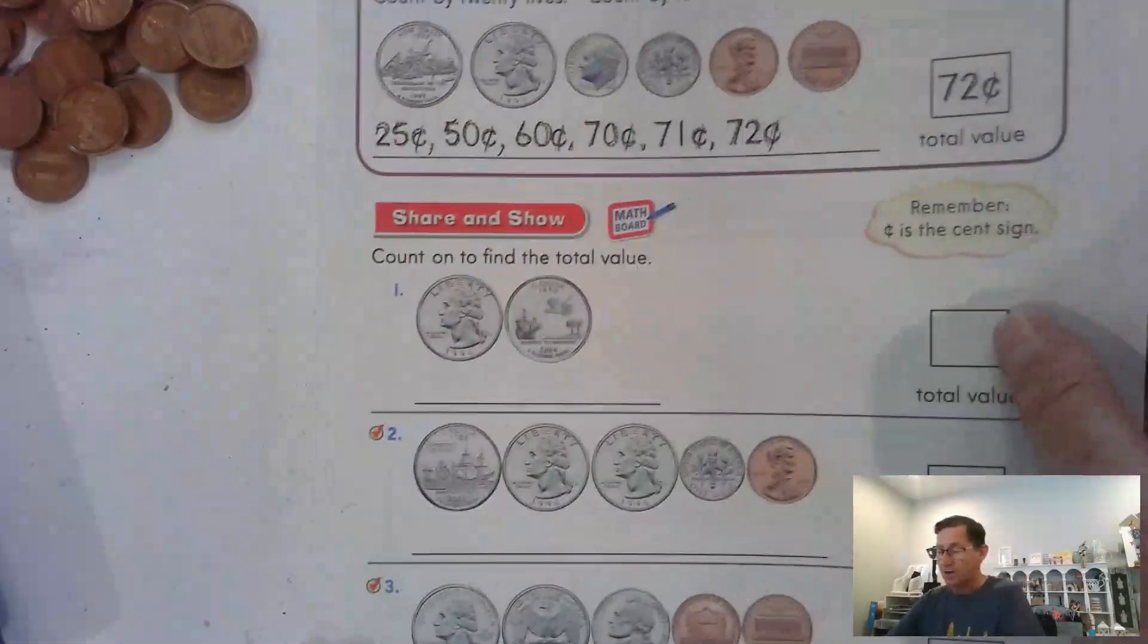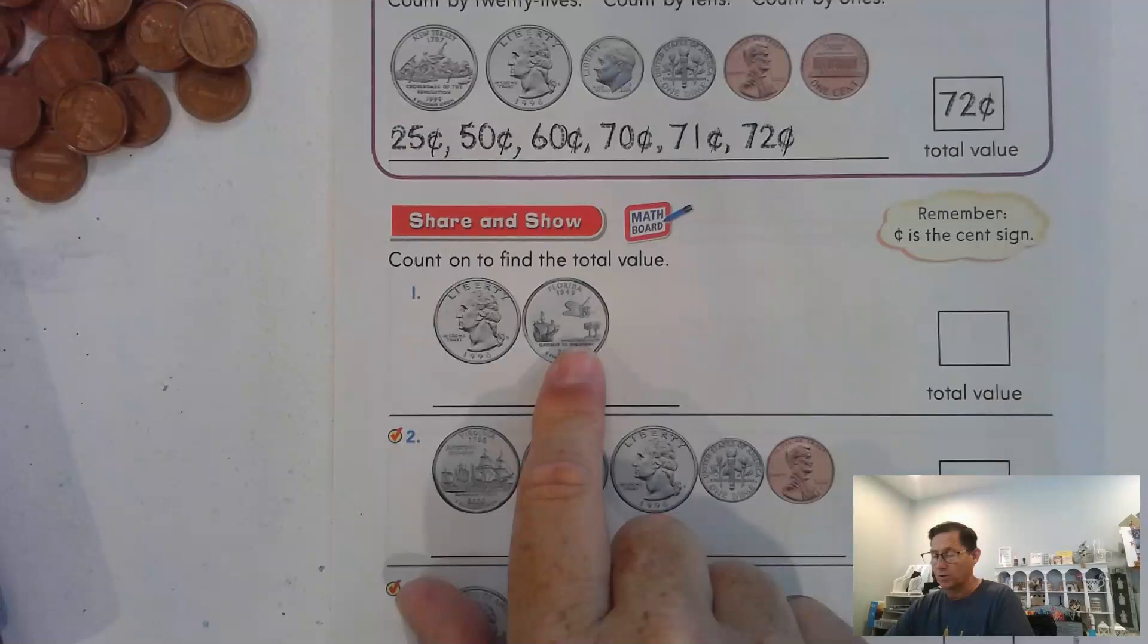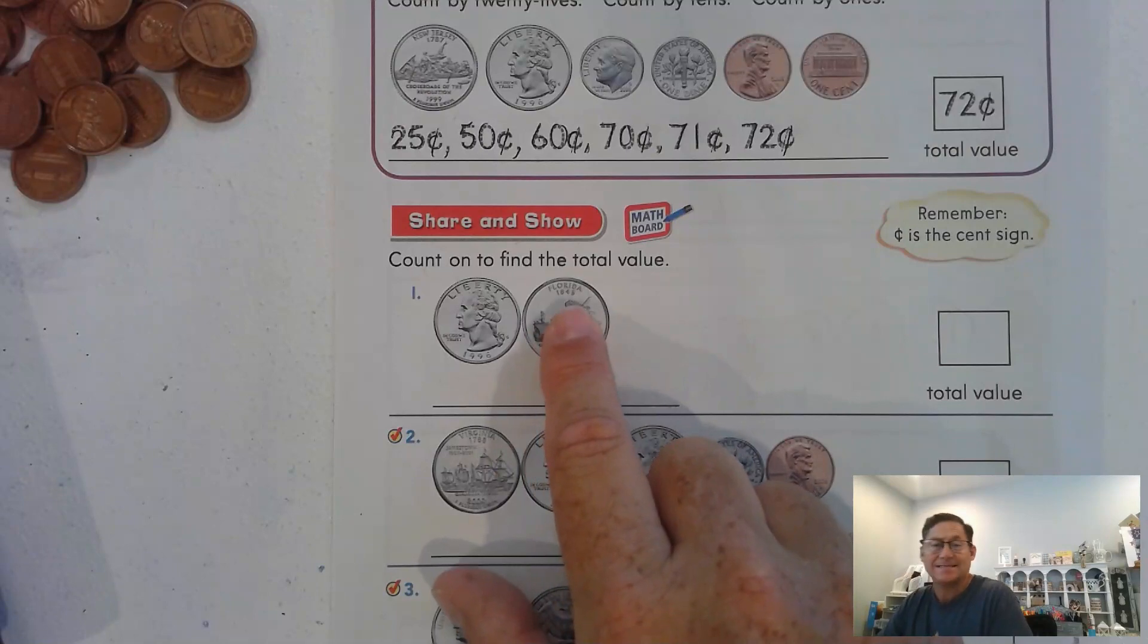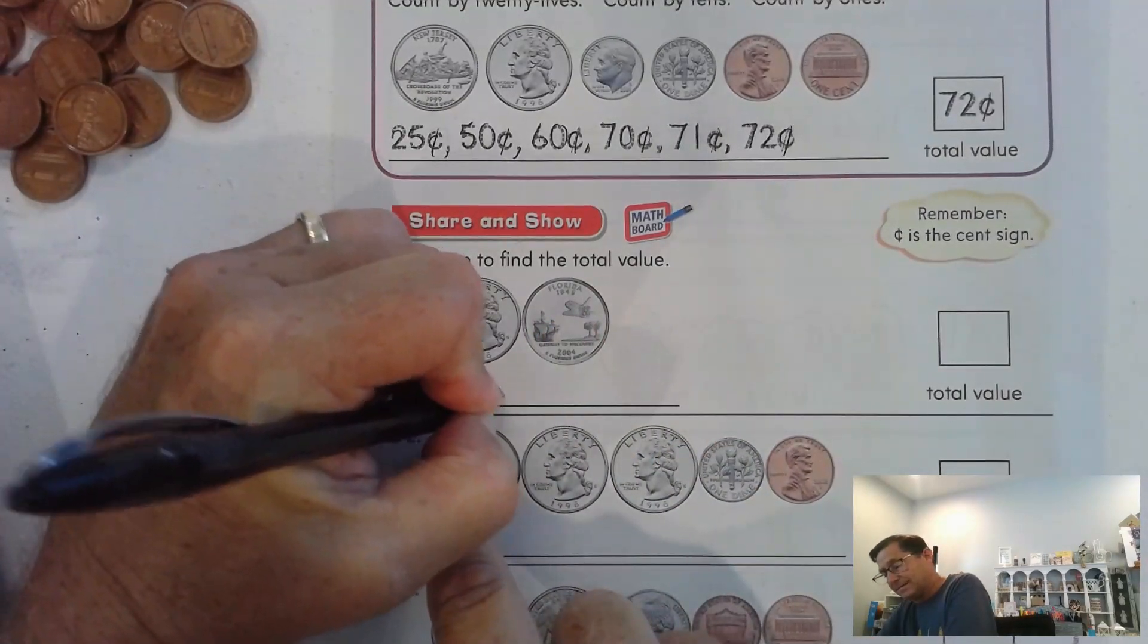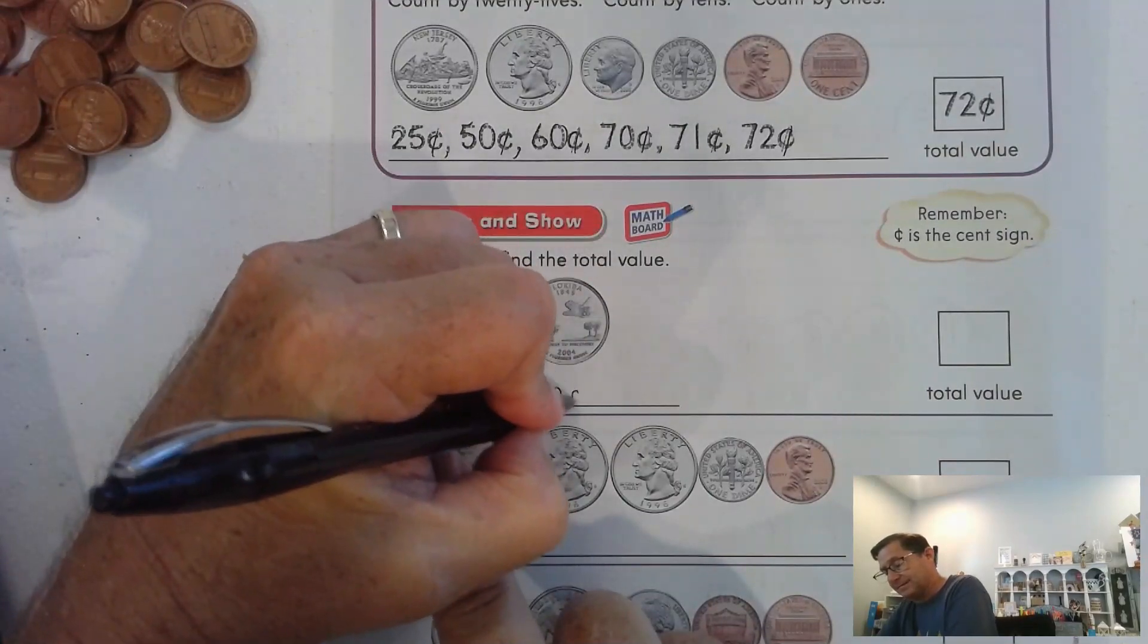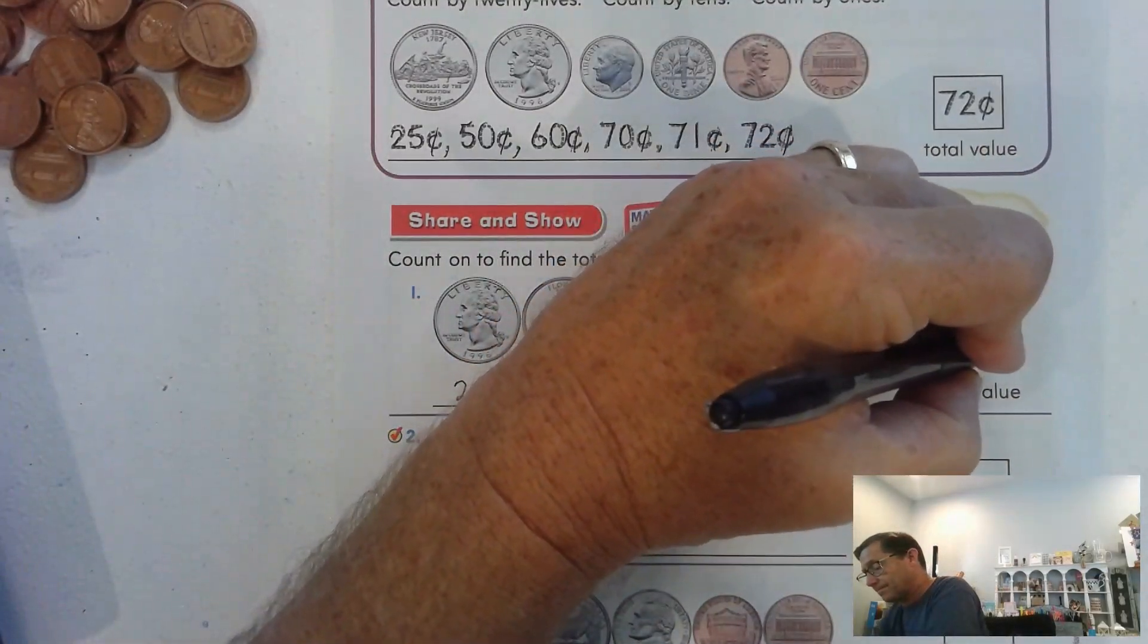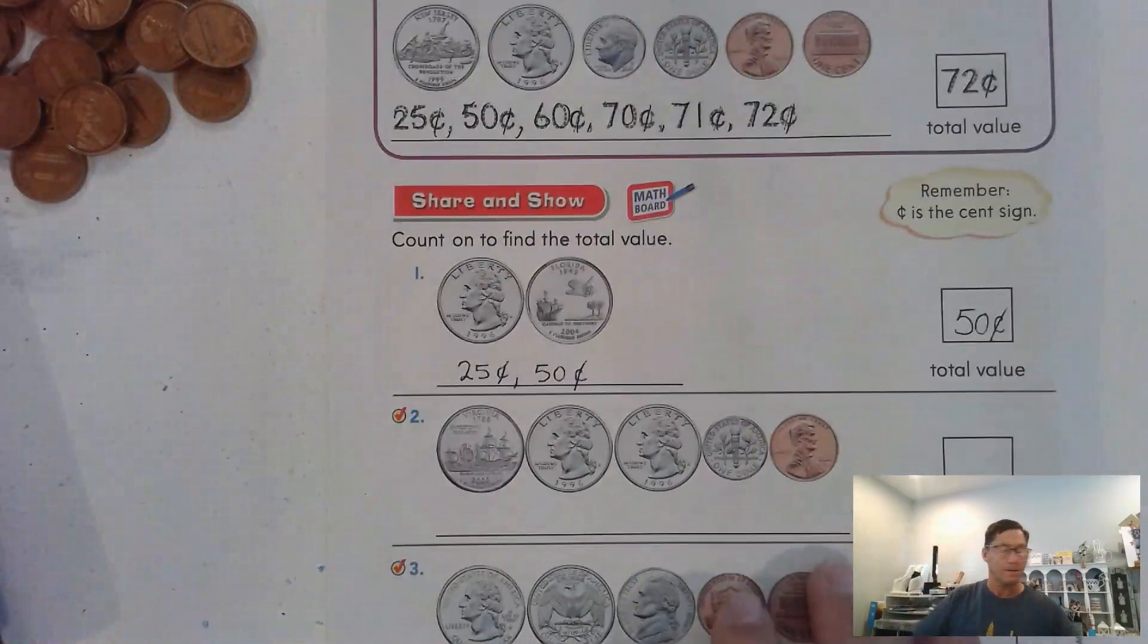All right, count on to find the value. We have two quarters. This quarter actually is from Florida because it says Florida, and Florida was founded in 1845. So 25 cents, then 50 cents. Two quarters is 50 cents.